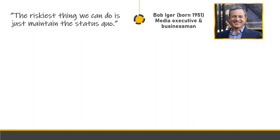Next is Bob Iger, a media executive and businessman. According to him, the riskiest thing we can do is just maintain the status quo. So if you have a business and your returns are going higher and higher, you'll have to maintain that status — maintaining your status is hard, but you have to work hard on it para mamintin mo yung status quo.